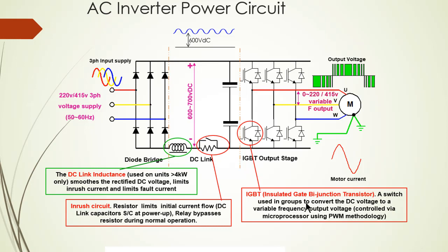IGBTs are used in a group to convert the DC voltage from the pure DC section. This section converts DC to AC voltage — that is, the DC voltage to a variable frequency output voltage — controlled via microprocessors. The output section provides zero to 220 or 415 volt variable frequency output to the motor terminals U, V, and W — the three-phase output.